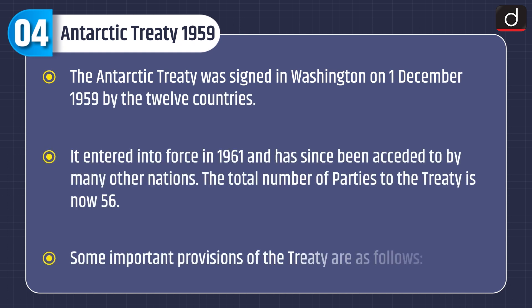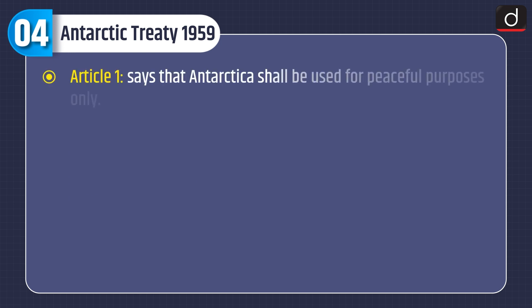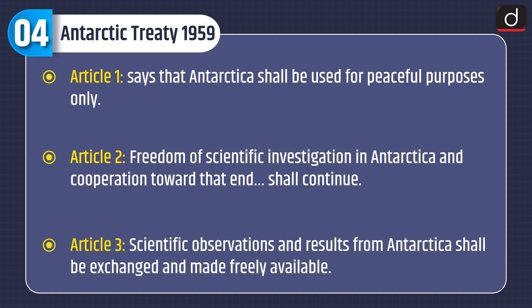The Antarctic Treaty was signed in Washington on 1st December 1959 by 12 countries. It entered into force in 1961 and has since been acceded to by many other nations; the total number of parties is now 56. Key provisions include Article 1 — Antarctica shall be used for peaceful purposes only — and Article 2 — freedom of scientific investigation and cooperation shall continue.